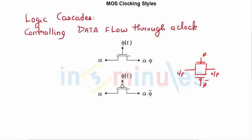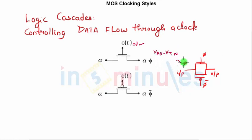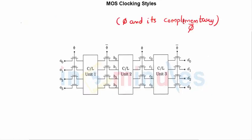Let's understand these cascades through a simple pass transistor. Clock signals are used because we want to control the data flow in VLSI systems. A basic pass transistor is shown here: when phi equals 1, the output is A AND phi. However, a pass transistor cannot pass a perfect logic 1 — it can pass a maximum of VDD minus VTN — and hence we use pass transistor logic. The first block operates on phi, the next on phi-bar, then phi, then phi-bar.